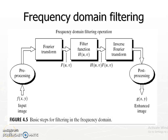Welcome back. Let us look at frequency domain filtering for image enhancement. In spatial domain, we have directly worked with the image and manipulated the pixel values directly. In frequency domain filtering, we do some preprocessing, then take the Fourier transform of the image, multiply it with the corresponding filter, and take the inverse transform for post-processing to get the enhanced image.